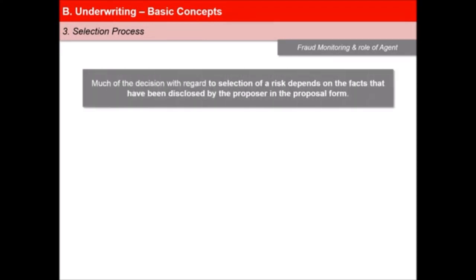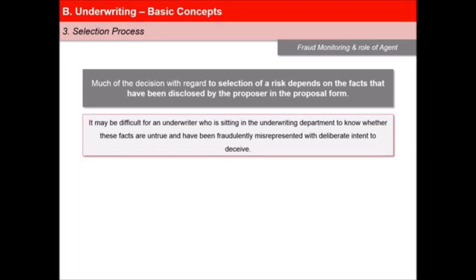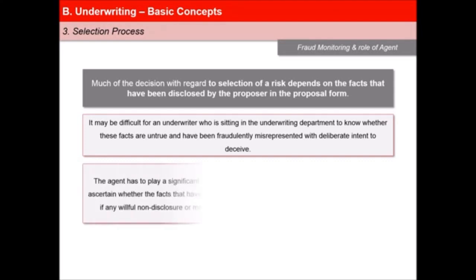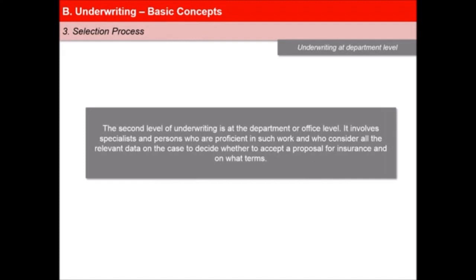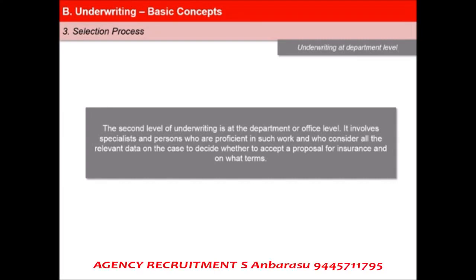Much of the decision with regard to selection of a risk depends on the facts that have been disclosed by the proposer in the proposal form. It may be difficult for an underwriter sitting in the underwriting department to know whether these facts are untrue and have been fraudulently misrepresented with deliberate intent to deceive. The agent has to play a significant role in risk assessment as he or she is in the best position to ascertain whether the facts represented are true or not. The agent must monitor any willful non-disclosure or misrepresentation made with an intent to mislead.